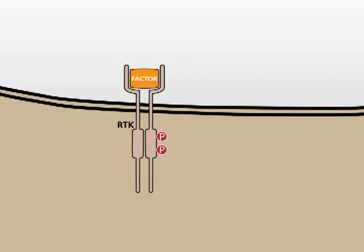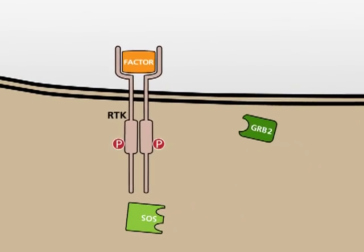Next, the growth factor receptor-bound protein 2, GRAP2 for short, can bind to the phosphorylated RTK.